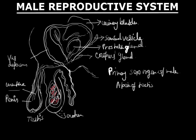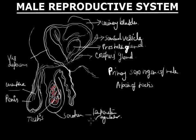What is the function of the scrotum? It helps in maintaining the temperature of the testes. The scrotum acts as a temperature regulator, keeping the testes below body temperature, which is necessary for the optimum production of sperm, the male sex gamete.